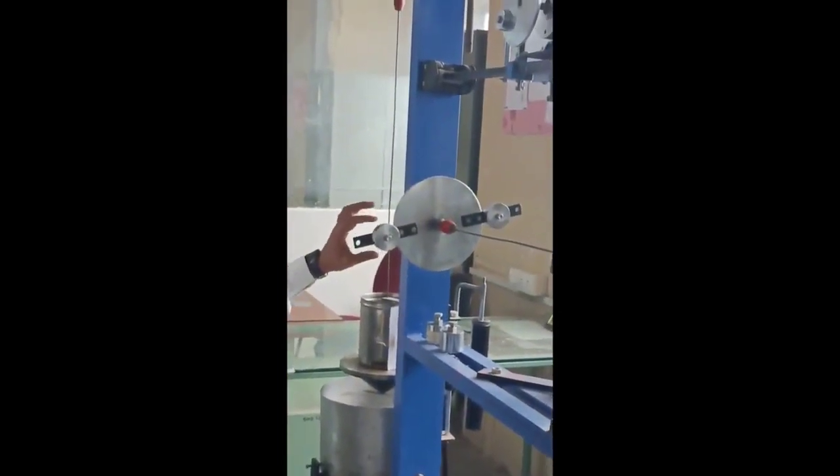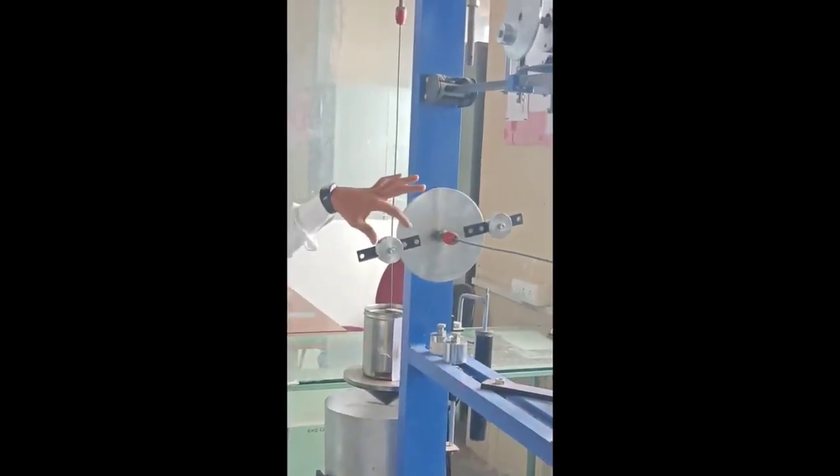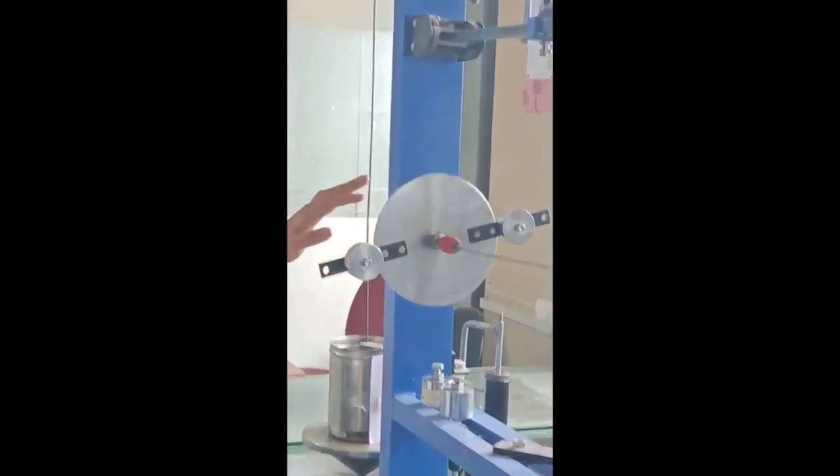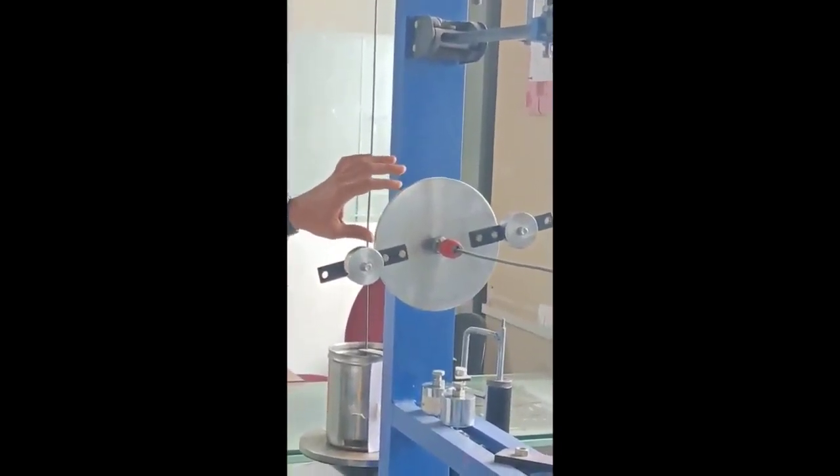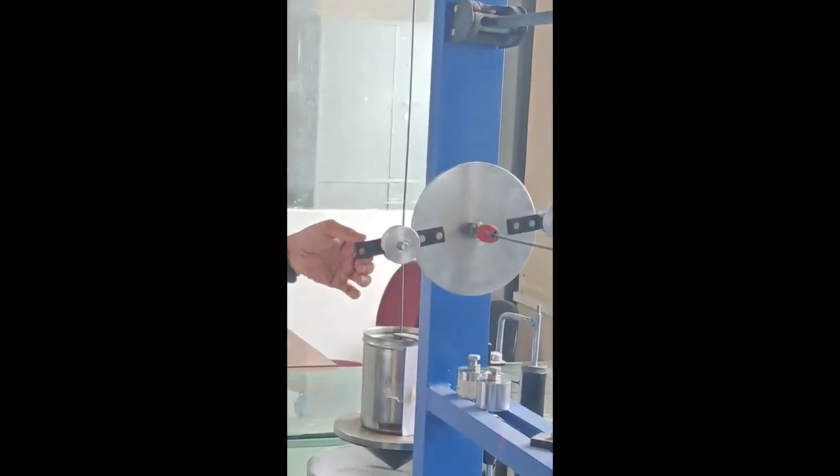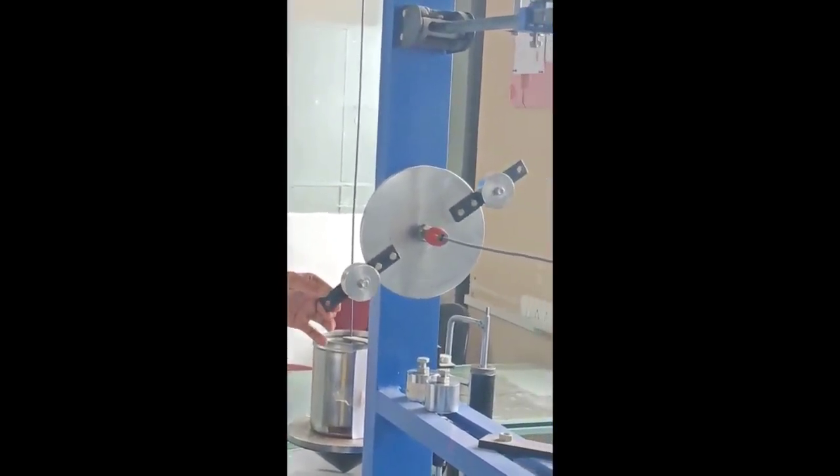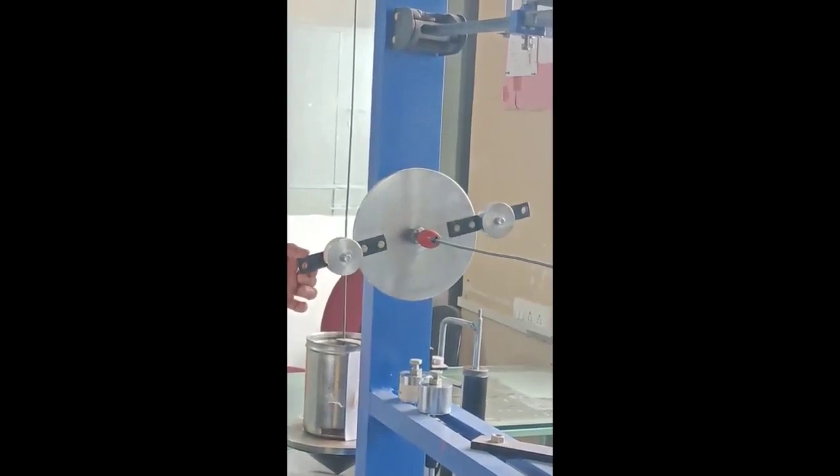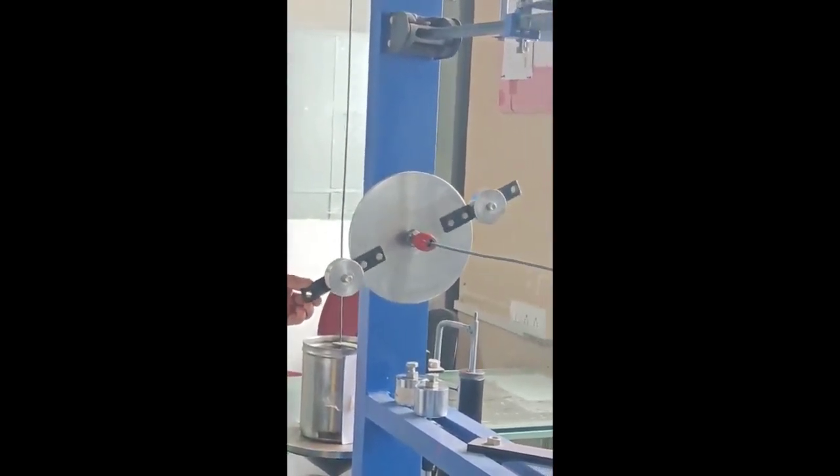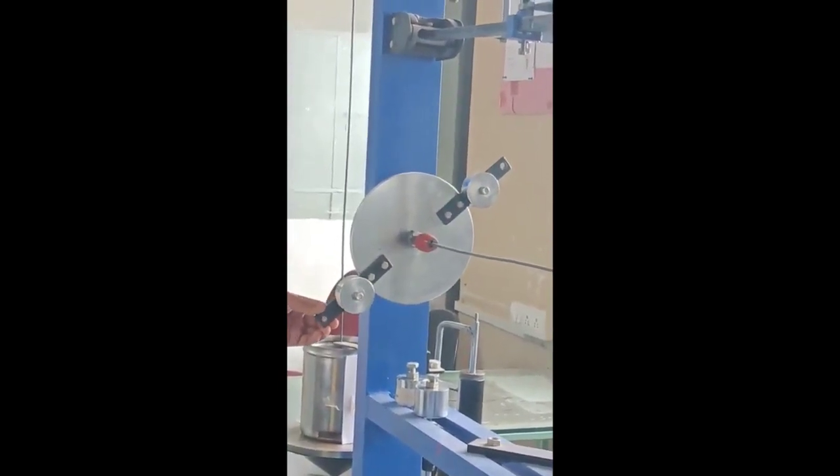For the second reading, 400 grams masses are placed at the r1 radius on both sides of rotor A. Rotor B is fixed. Rotor A is displaced by applying force to the arm. This gives oscillations in that direction.